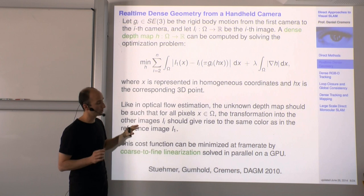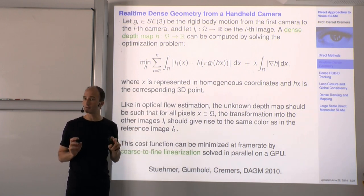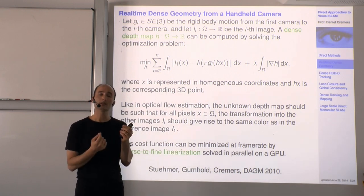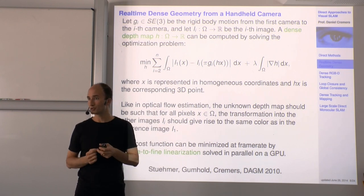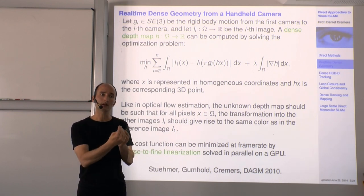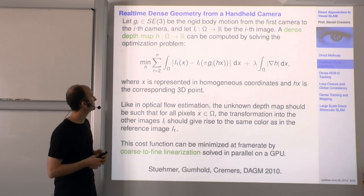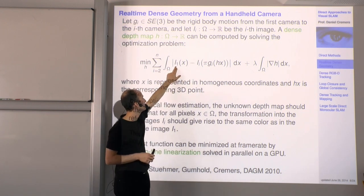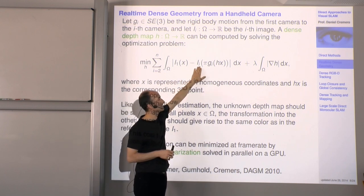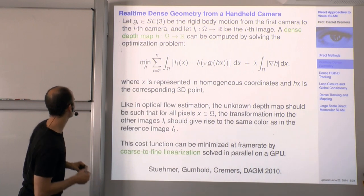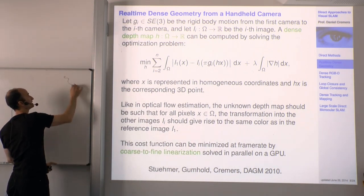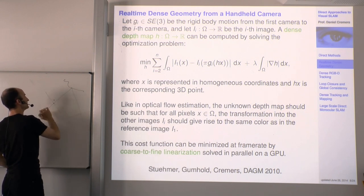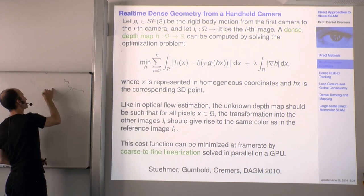What motivated us was to start with an optical flow type approach. In optical flow, the idea is to find correspondence by imposing color consistency for consecutive images. Here, you can do the same: the color of the first image at some pixel x should be the same as the color in image i. We have a 3D point H times x in homogeneous coordinates, and we ask what color that point should have in the other image.